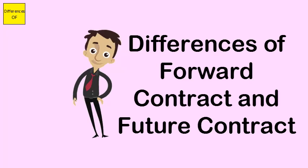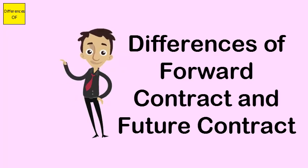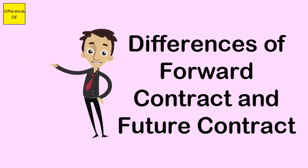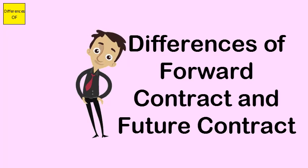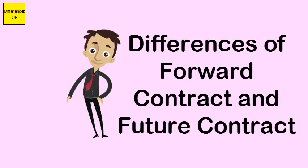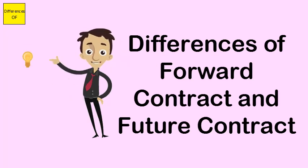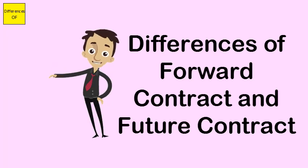A forward contract is not regulated, while a future contract operates in a government-regulated market. A forward contract comes with high risk, whereas a future contract comes with low risk.